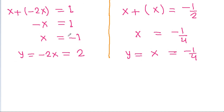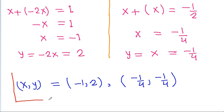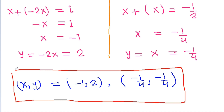So from here, we get x is equal to minus 1 and y is equal to 2, and from the other case, x is equal to minus 1 by 4 and y is equal to minus 1 by 4. These are the two values of x and y.